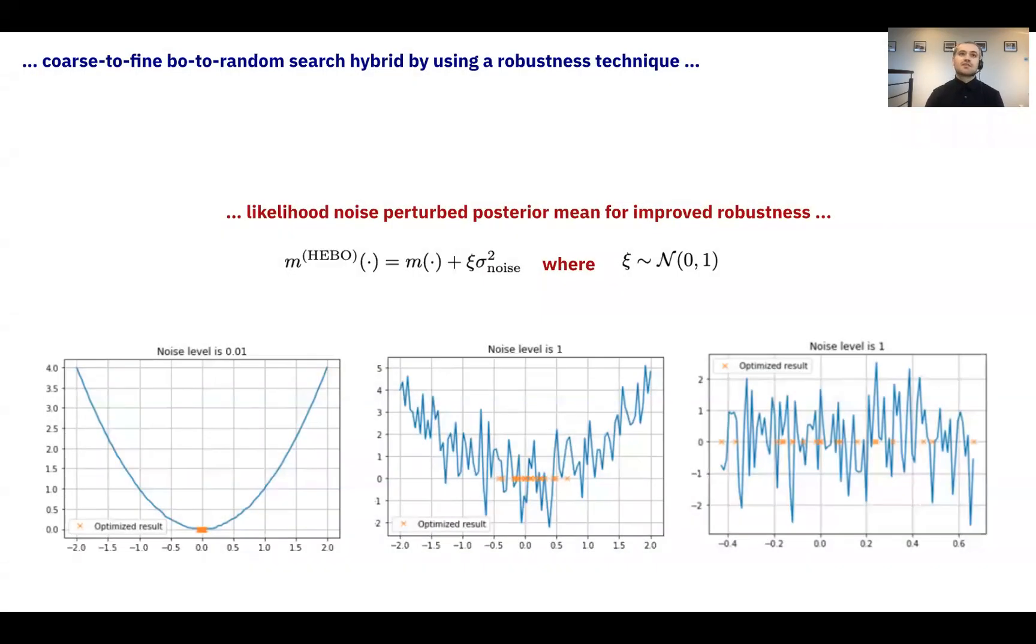This led us to creating a novel robustness technique which allows our Bayesian optimization algorithm to resort to random search when the learned likelihood noise is high. This is achieved through adding a noise dependent on the likelihood variance onto the posterior mean of the Gaussian process. As you can see in the plots, as likelihood noise level increases, we similarly get increasingly random search around the desired region.